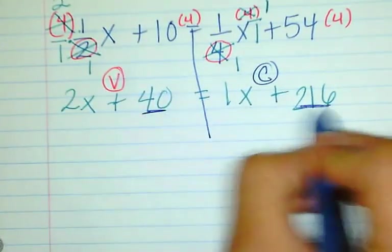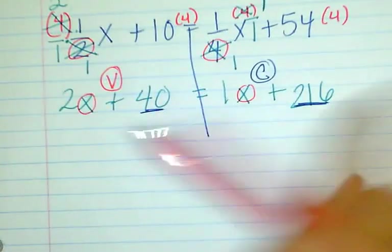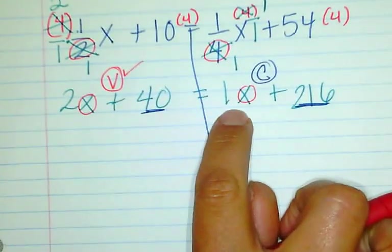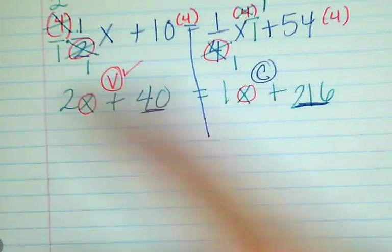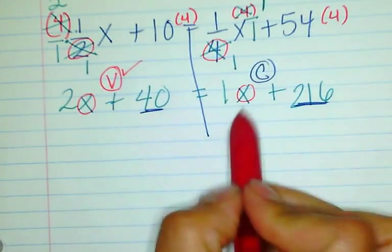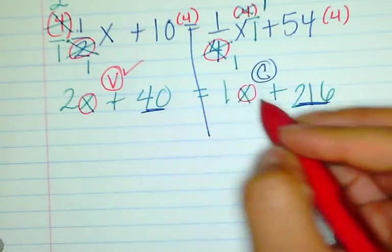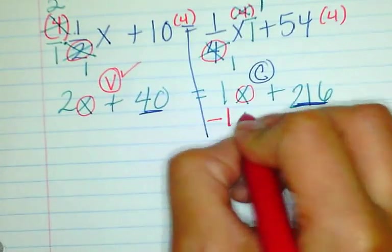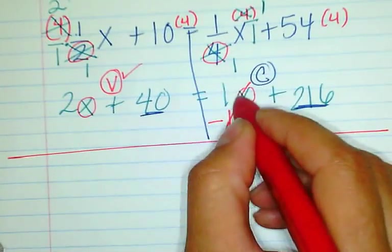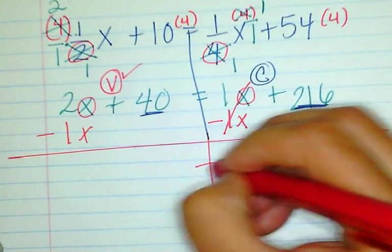Now I'm ready to designate a side for the constants and a side for the variables. This will be the variable side, and this will be the constant side. My variables are here and my constants are here, so I'm going to move terms to their correct sides. The 2x is already on the correct side, but the 1x is not. When switching sides, I can only use adding and subtracting. Since 1x is positive, I'll subtract 1x from both sides to zero it out. I align it where the x's are, and over here I still have 216.